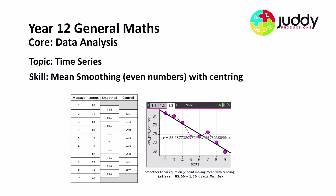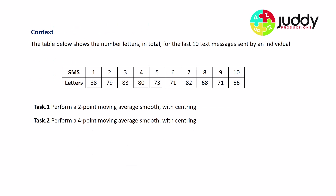Hi mathematicians! In today's video we're looking at time series, specifically the skill of mean smoothing with even numbers, and that involves centering. The context: the table below shows the number of letters in total for the last 10 text messages sent by an individual.